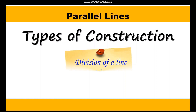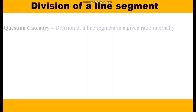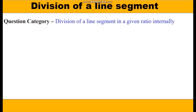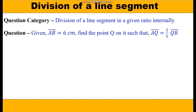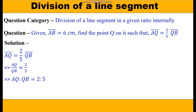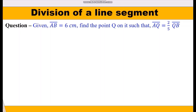Now we shall move to the second type of construction, i.e., division of a line segment in a given ratio internally. Let's take up a question: AB is given as 6 cm. Find the point Q on it such that AQ is equal to 2/5 of QB. By cross multiplication, AQ upon QB is equal to 2 upon 5, which means AQ is to QB is equal to 2 is to 5. Now 2 plus 5 equals 7, so 7 points need to be marked.